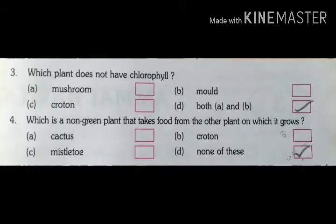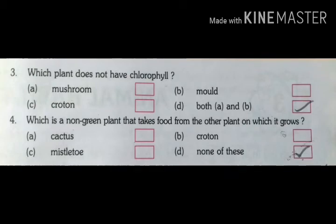Third question: Which plant does not have chlorophyll? Chlorophyll gives plants their greenery. A. Mushroom, B. Mound, C. Croton, D. Both A and B. The answer is both A and B — mushroom and mound, as they have no greenery.